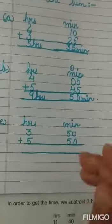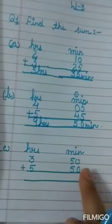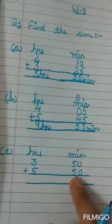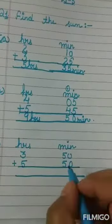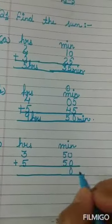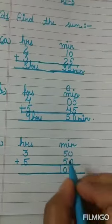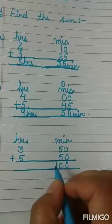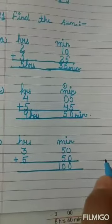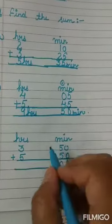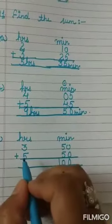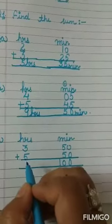E part is 3 hours 50 minutes and 5 hours 50 minutes. Let's add: 0 plus 0 is 0, 5 plus 5 is 10. अब ये देखो — आप बोलोगे मैंने यहां carry over क्यों नहीं दिया? Because these are minutes and these are hours.